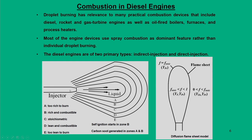The fuel is injected from an injector into compressed air at elevated pressure and temperature, causing self-ignition. This self-ignition process is modeled through a layer of diffusion sheets with different zones: A (too rich to burn), B (rich but combustible), C (stoichiometric), D (lean but combustible), and E (too lean to burn).